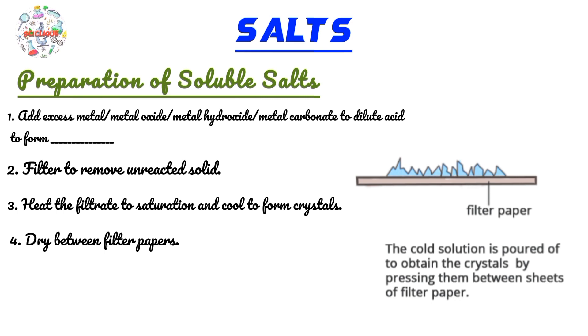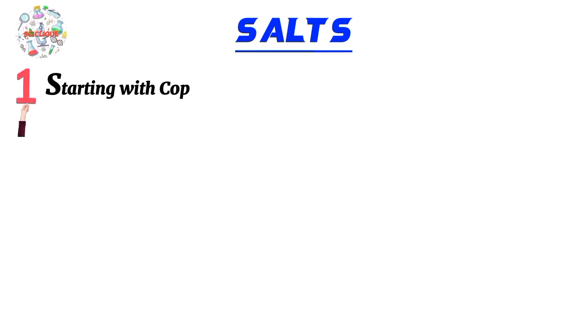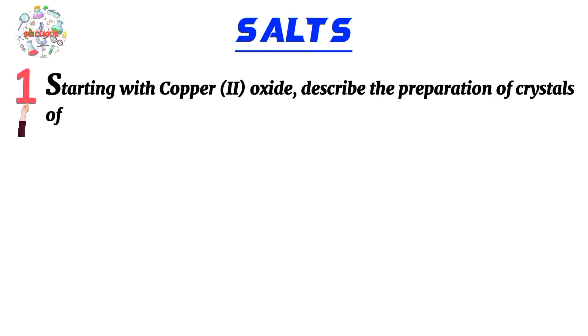The last step is to dry the crystals between filter papers so that you end up with dry crystals. Moving on to our first question: starting with copper(II) oxide, describe how you can prepare crystals of copper(II) sulfate.